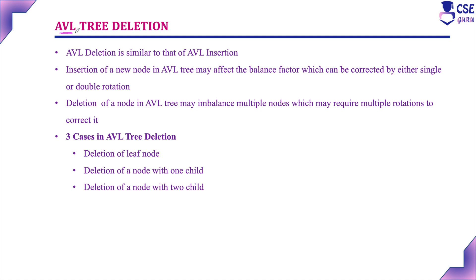The binary search tree condition must be satisfied and the balance factor must also be satisfied. The balance factor is the difference between the left subtree and the right subtree — the number of nodes in the left subtree and the right subtree should differ by 0, +1, or -1. Then the tree is balanced; otherwise, the tree is unbalanced.